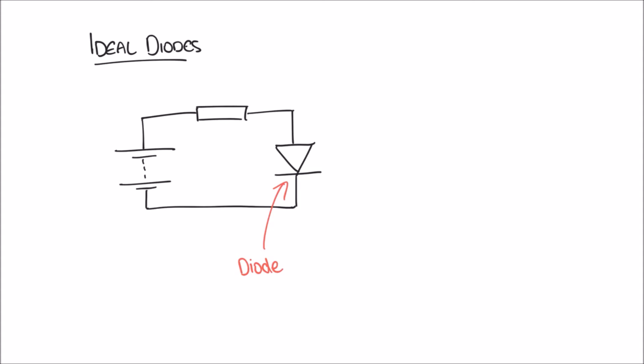If we put a diode in one direction in the circuit it will allow current to flow, but if we turn that diode around we'll find that it prevents current from flowing. The best way to remember which way around a diode should go is to look at the triangle shape of the diode and think of it as an arrow pointing in the direction of current flow. In this case the diode is in what we call forward bias — current flows from positive to negative, matching the direction of that triangle arrow.